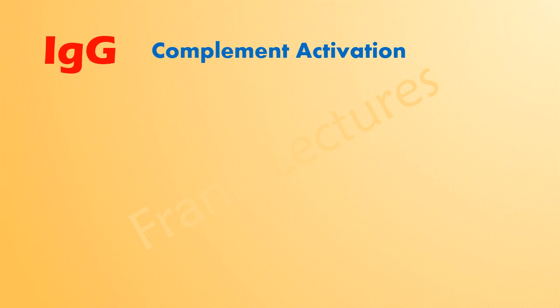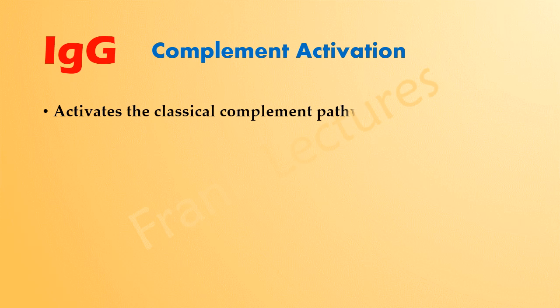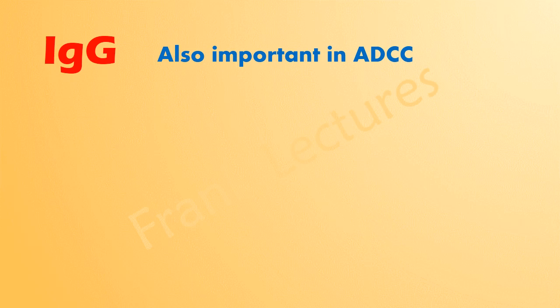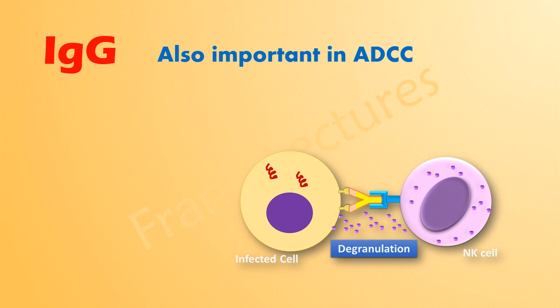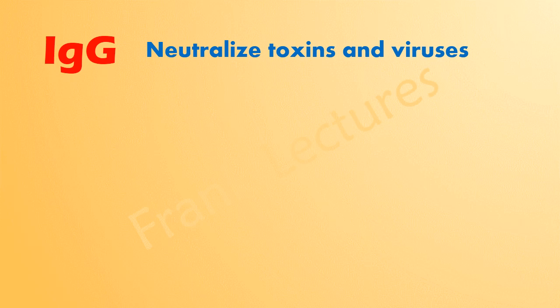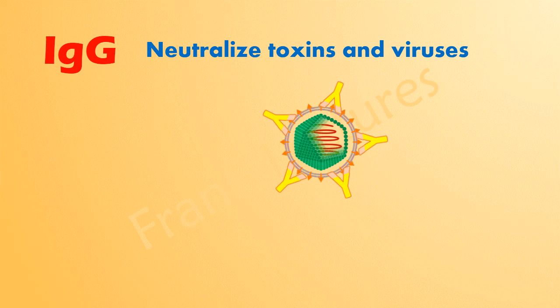IgG is also effective in complement activation, activating the complement system via the classical pathway. It also contributes to antibody-dependent cell-mediated cytotoxicity. Lytic cells such as natural killer cells have Fc gamma receptors on their surface that bind the Fc region of IgG antibodies. Additionally, IgG antibodies neutralize toxins and viruses, making it an excellent neutralizing antibody.